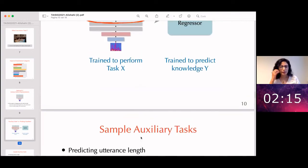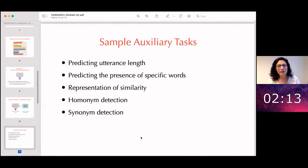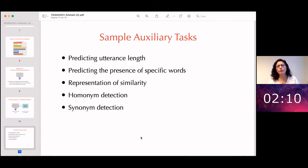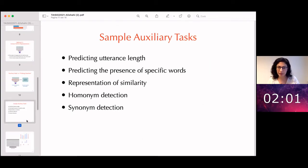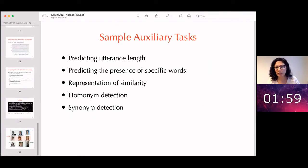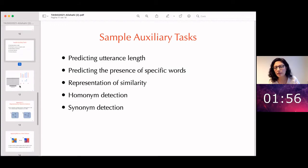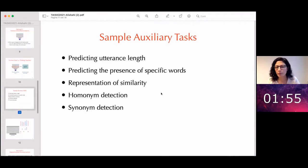Here is a number of sample auxiliary tasks that you could potentially use for the example model that I showed you before, mapping images to sentences. You can train classifiers or regressors to predict, for example, the length of the utterance, the presence of specific words, representation of semantic or form similarity, et cetera.